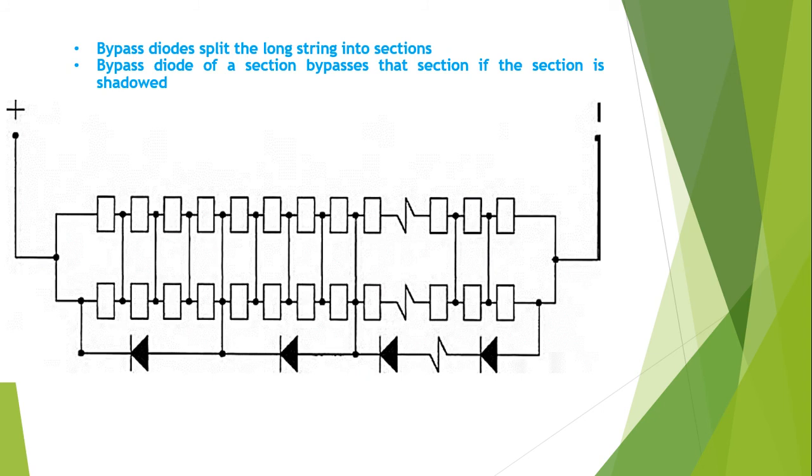The bypass diode splits the long strings into sections like these. This is the first section, this is the second section, and so on. Bypass diode of a section bypasses that section if the section is shaded, so in that case it would be absorbing the power that is produced by the remaining non-shaded cell.